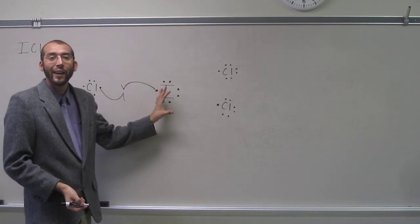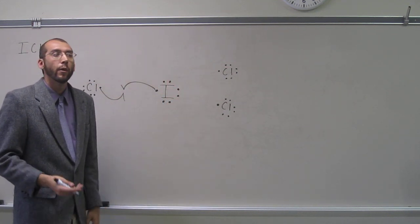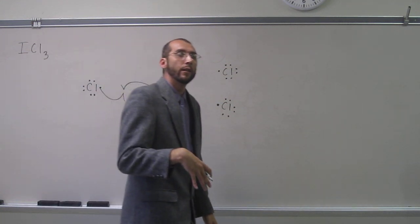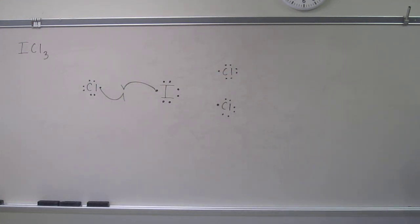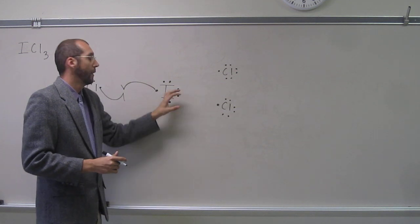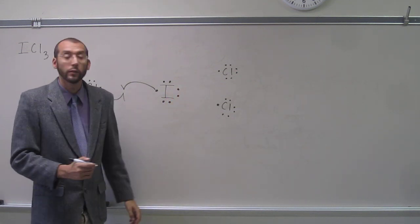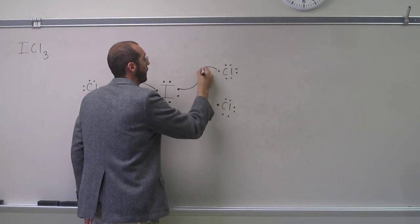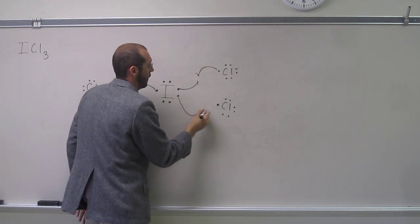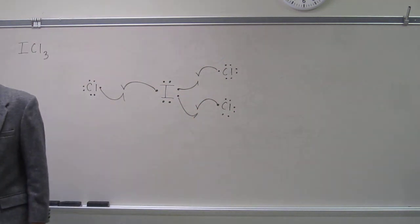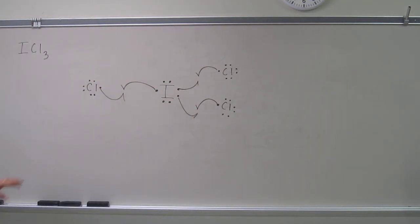But because iodine has expanded its valence, and remember, what do we need in order to form a bond? We need a half-filled orbital. So what happens is this orbital that's filled kind of splits up and becomes two half-filled orbitals. So when that happens, we get something like that. Does everybody see that?